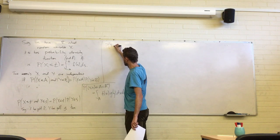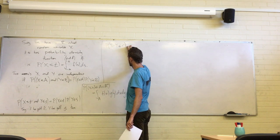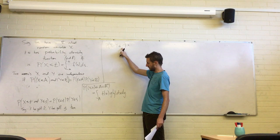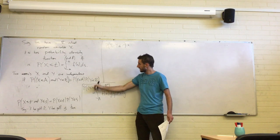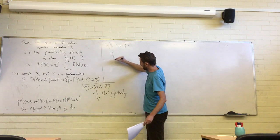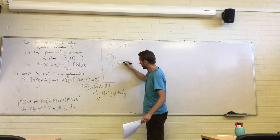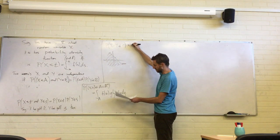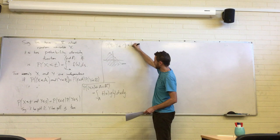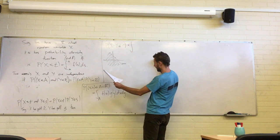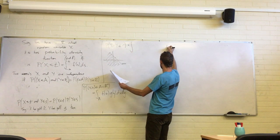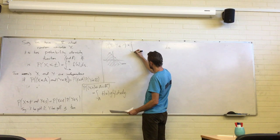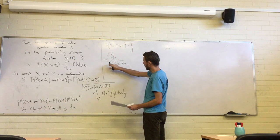So then the probability that x plus y is less than or equal to r is exactly the same as saying that the pair (x, y) lies in the region where x plus y equals r. So we can do this just as an integral of the product of the probability density functions. Let's do the integral over x first.